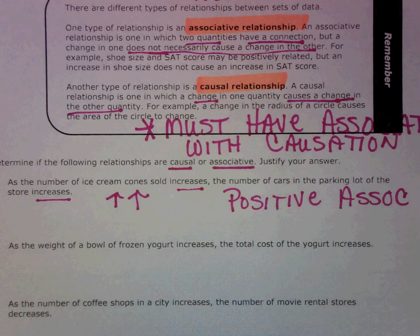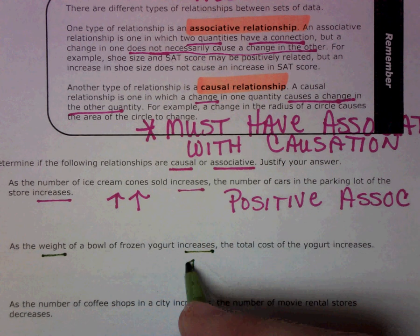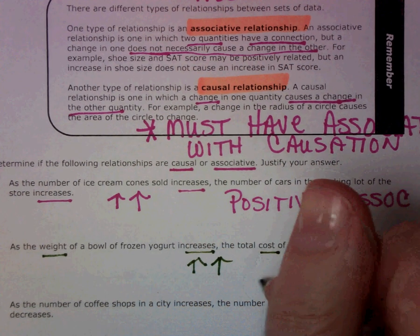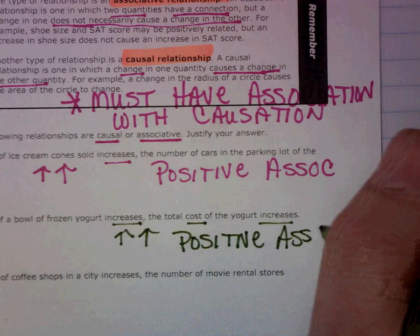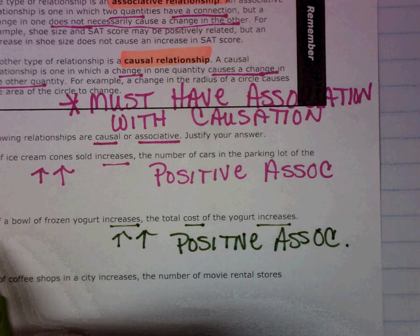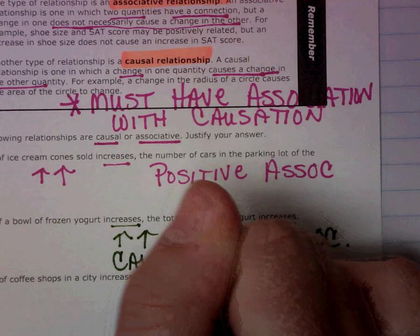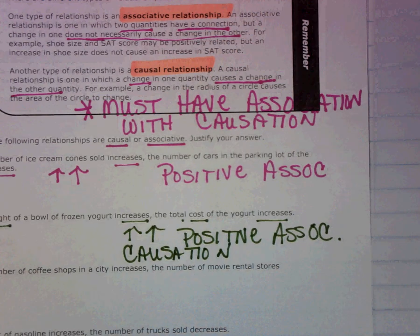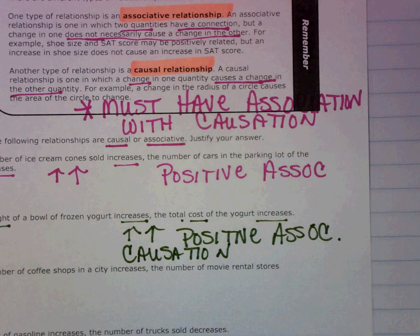Number eight: as the weight of a bowl of frozen yogurt increases, the total cost also increases. So that is a positive association. Next we need to ask ourselves, does one thing cause the other? Does the weight cause the cost? And the answer is yes, because think about when you go to a place like Yemalicious — if you're charging by the weight of the bowl, then yes, as the weight goes up, so does the cost. So that one has a positive association, and it is causation.